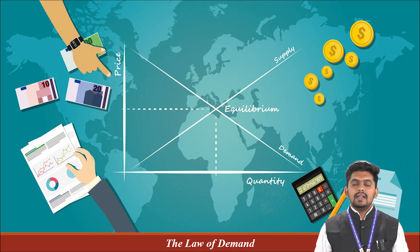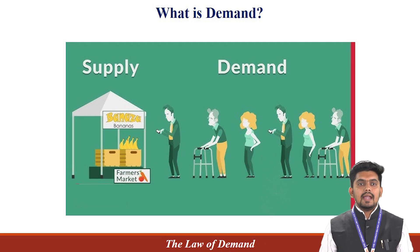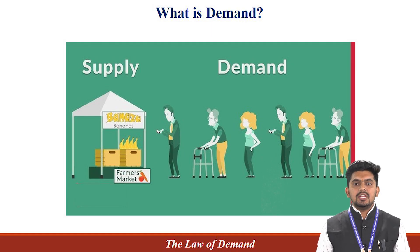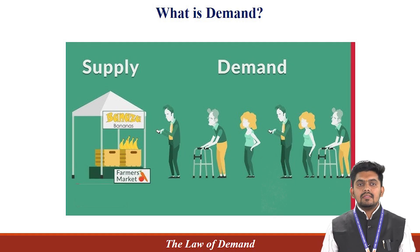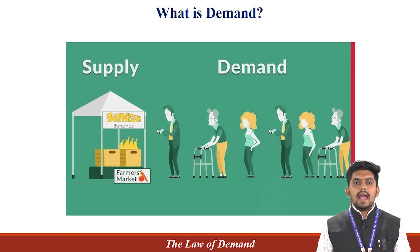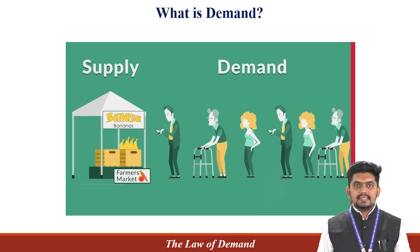Today we are going to explore a fundamental concept of economics — the Law of Demand. The Law of Demand explains how people respond to changes in prices. It simply states that, other things being equal, when the price of goods and services increases, the quantity demanded decreases. And when the price decreases, the quantity demanded increases. In other words, there is an inverse relationship between the price of a product and the amount people are willing to buy. Think about it — if the price of your favorite snack suddenly doubles, you are likely to buy less of it. On the other hand, if there is a discount, you will probably buy more. That's the Law of Demand in action.